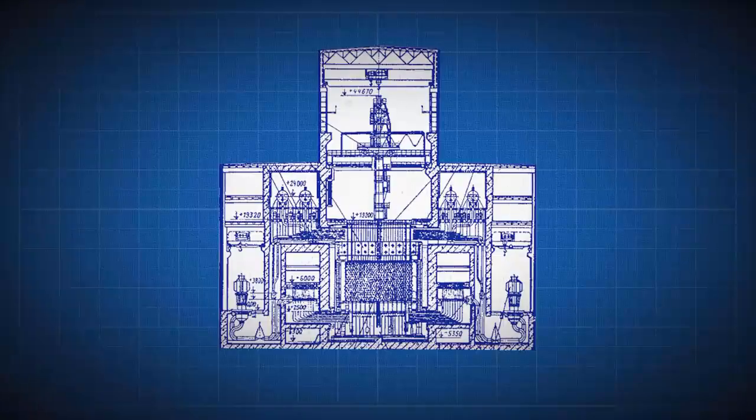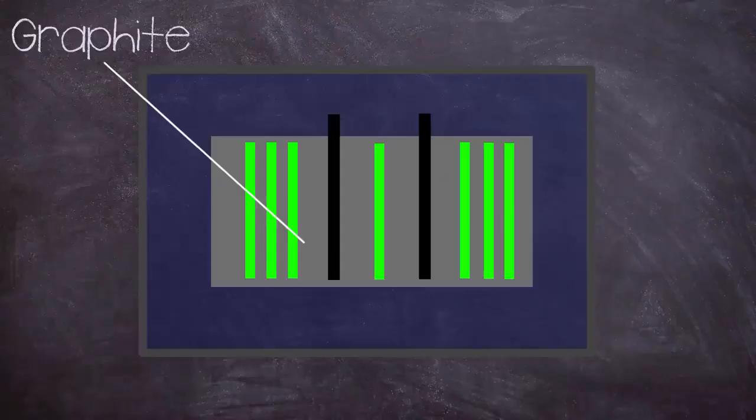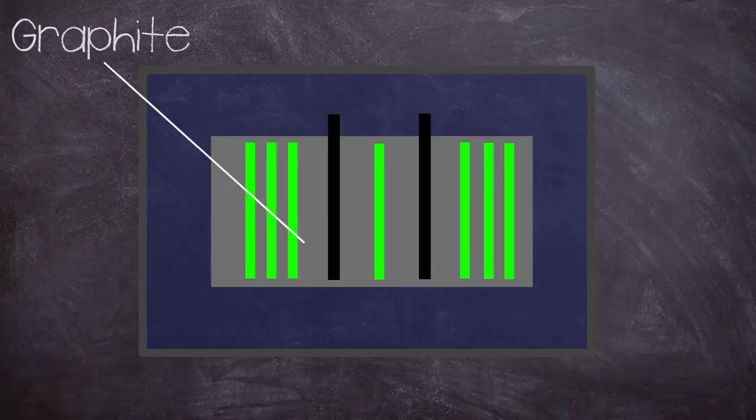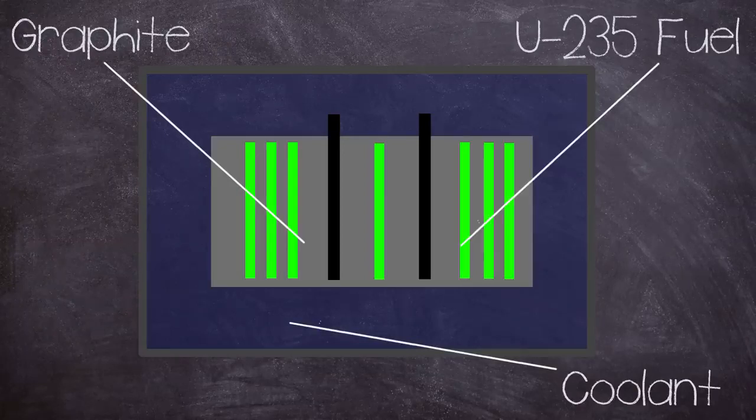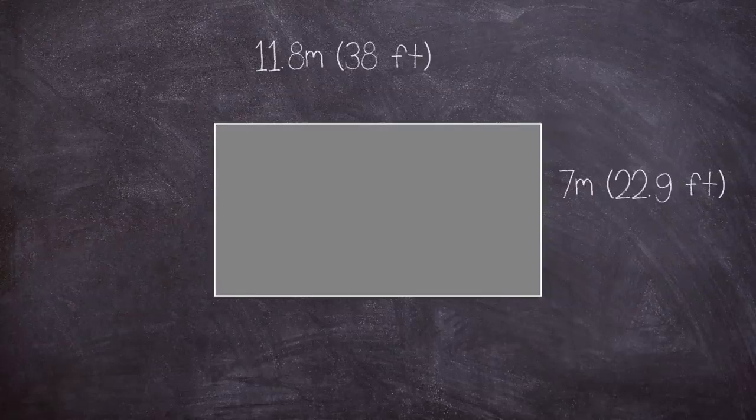The RBMK was a unique design that used graphite to moderate the chain reaction with light water as coolant. This combination allowed it to use lower enrichment uranium-235 for fuel, which was significantly cheaper. The RBMK had a very large core region of seven meters height and 11.8 meters diameter, mounted in a steel cylinder placed on top of a biological shield. The steel cylinder was 16 millimeters thick with diameter of 14.52 meters by height of 9.75 meters, inside a reinforced concrete lined pit.